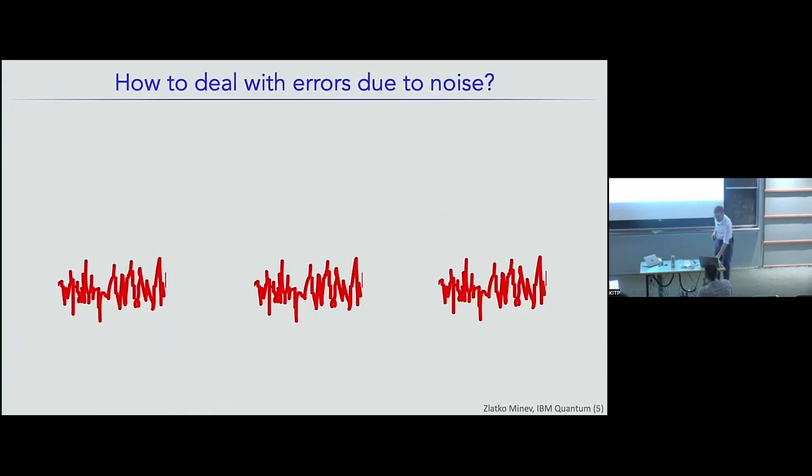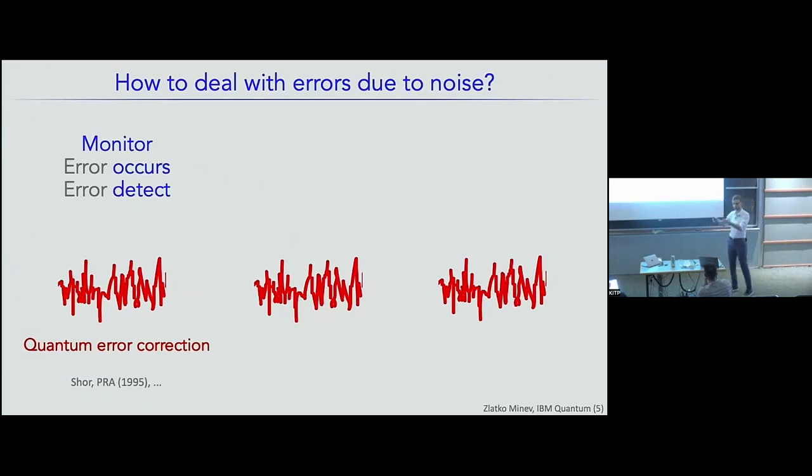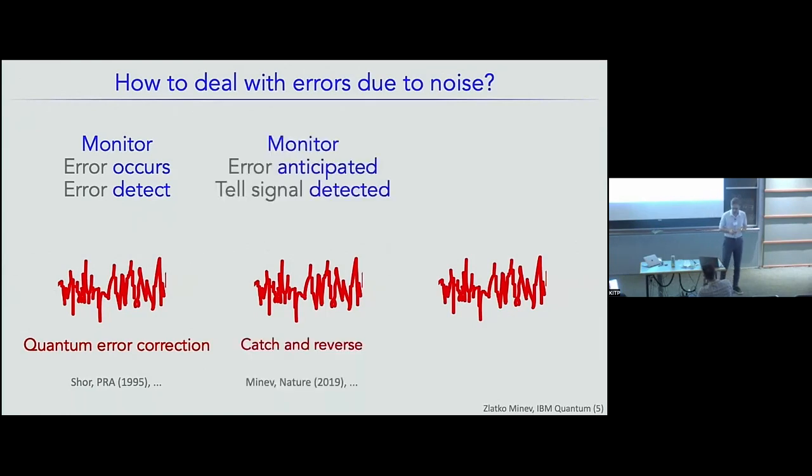So what can you do to deal with noise? And broadly, the way I personally see it is that there's probably three broad categories. First, you can try to monitor your system. Errors occur. And post-factum, you detect those errors. And then you can hopefully recover from them. And that's essentially quantum error correction. Now, this is very hard, and many people are working on it, but we're not quite there yet for large-scale systems.